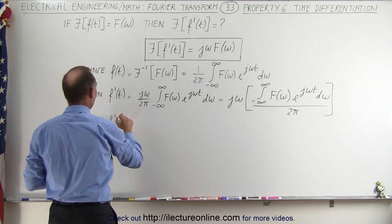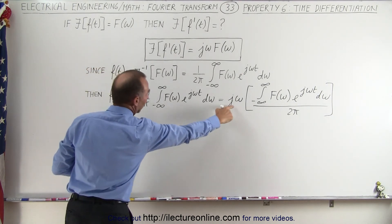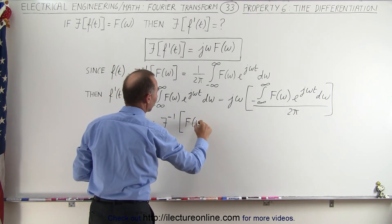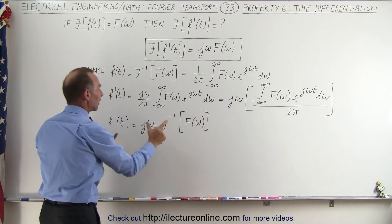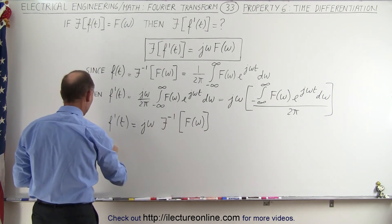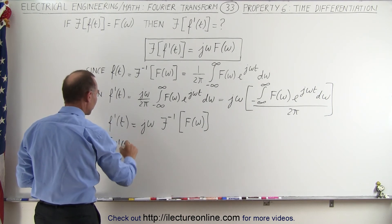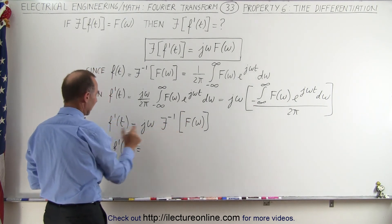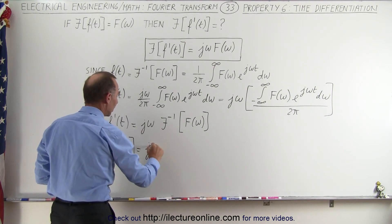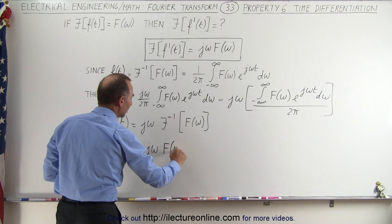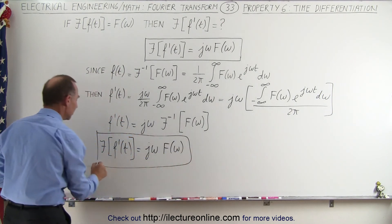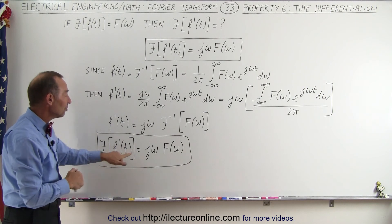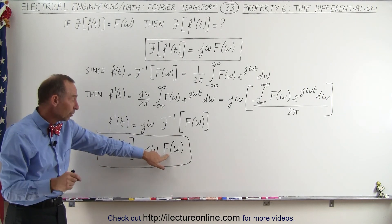So in other words, f prime of t becomes equal to j omega times the inverse Fourier transform of the function in the frequency domain. Now, if we take the Fourier transform of both sides, on the left side we get the Fourier transform of the derivative of the function in the time domain, and that equals j omega times the function in the frequency domain. So indeed, if you take the Fourier transform of a time domain function that has been differentiated with respect to time, you simply get the function in the frequency domain multiplied by j times omega.